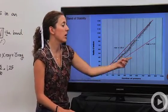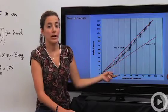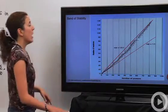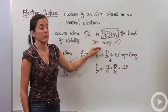Okay, so this is when it's below, when it's low down here. It's going to go through electron capture. So that means we have too many protons. We have to get rid of some protons somehow.